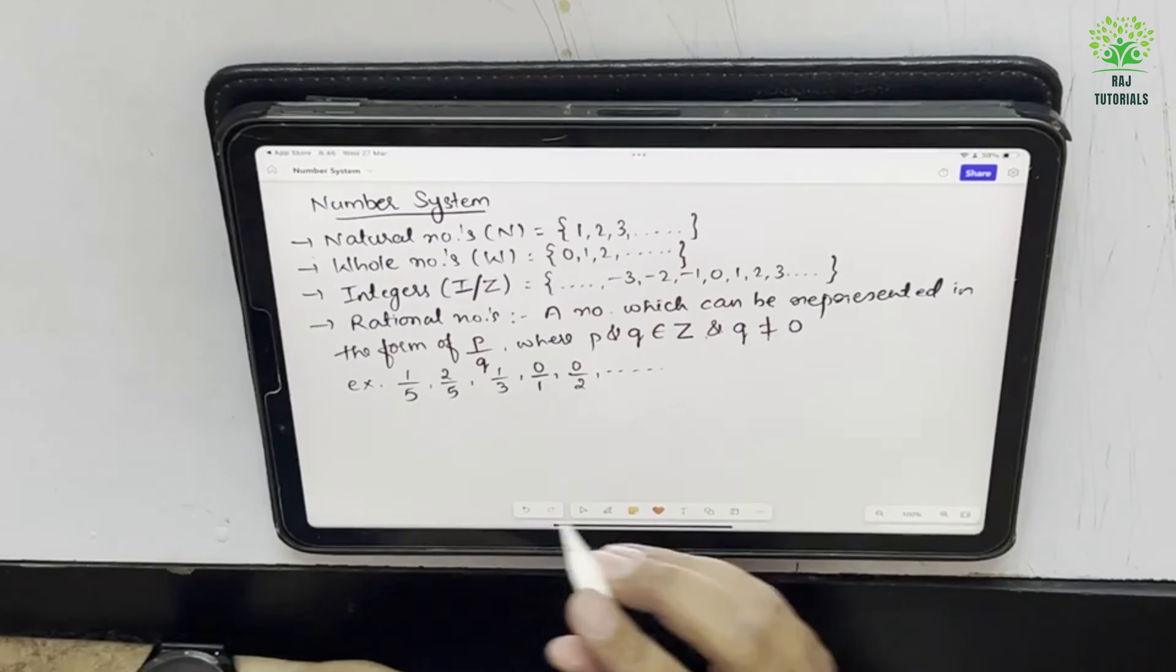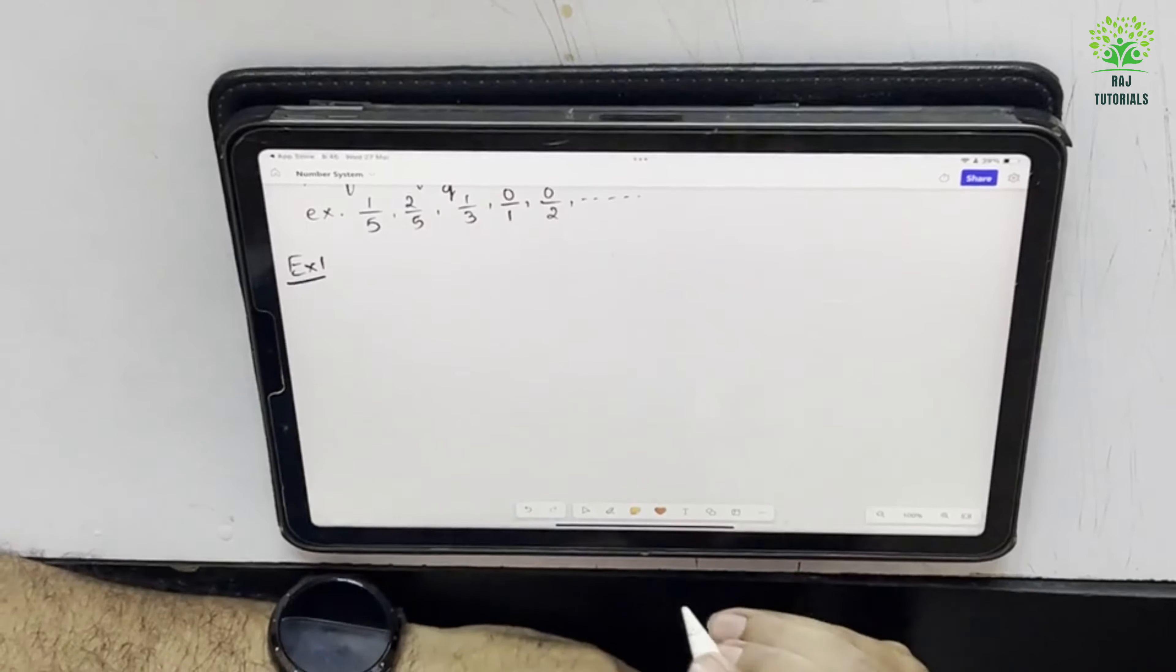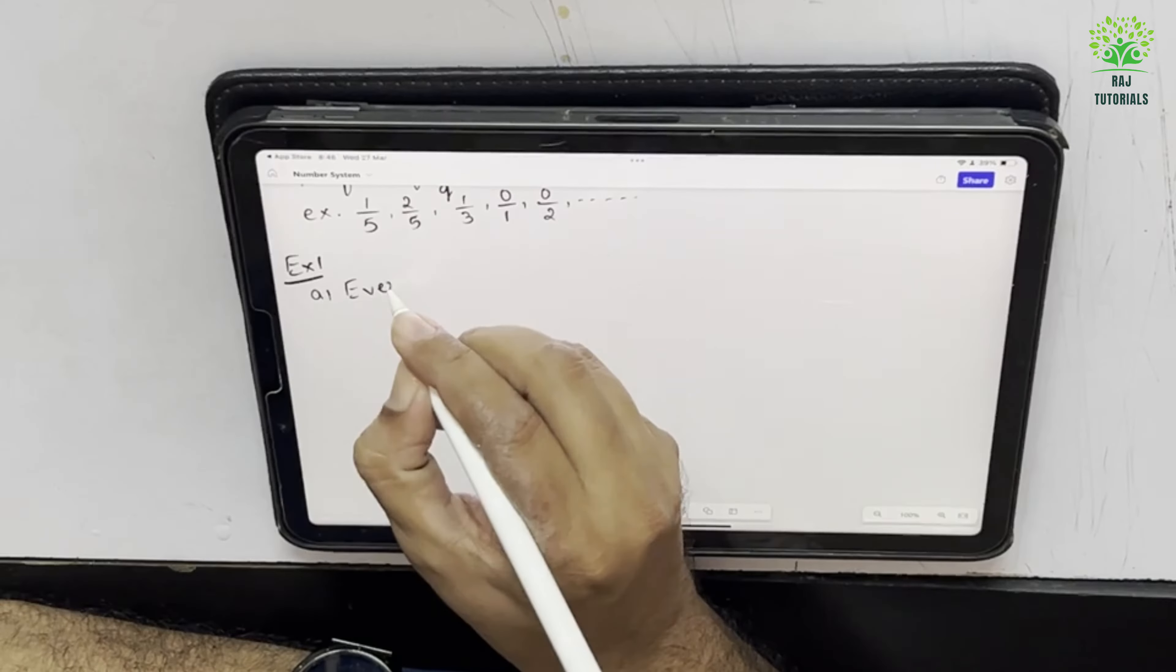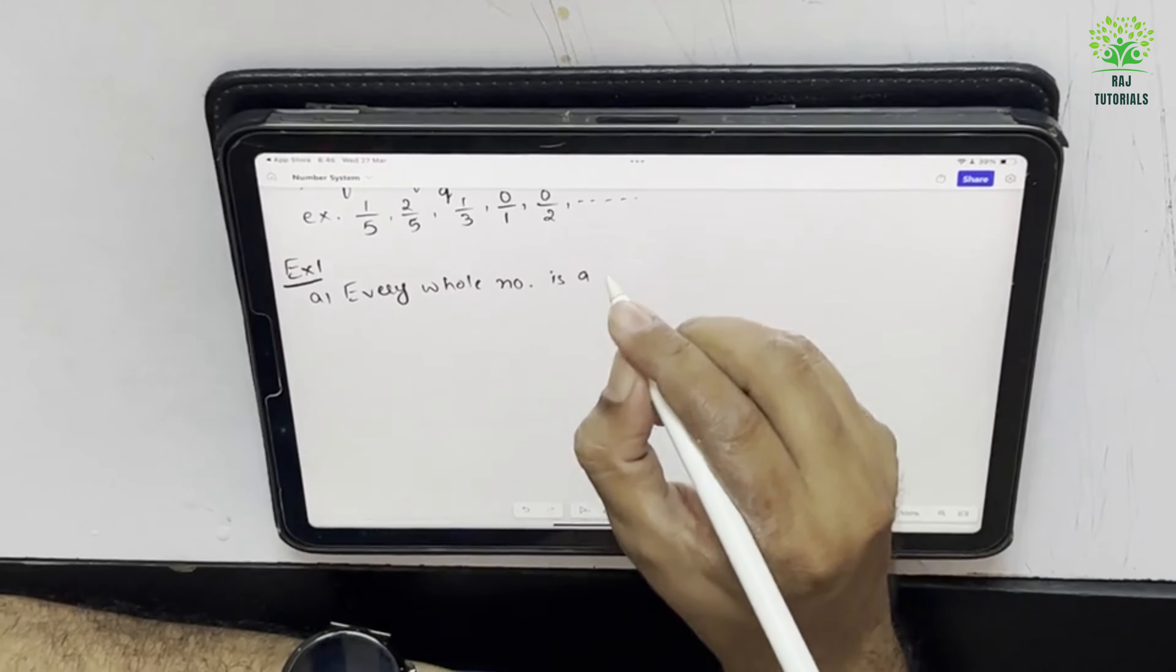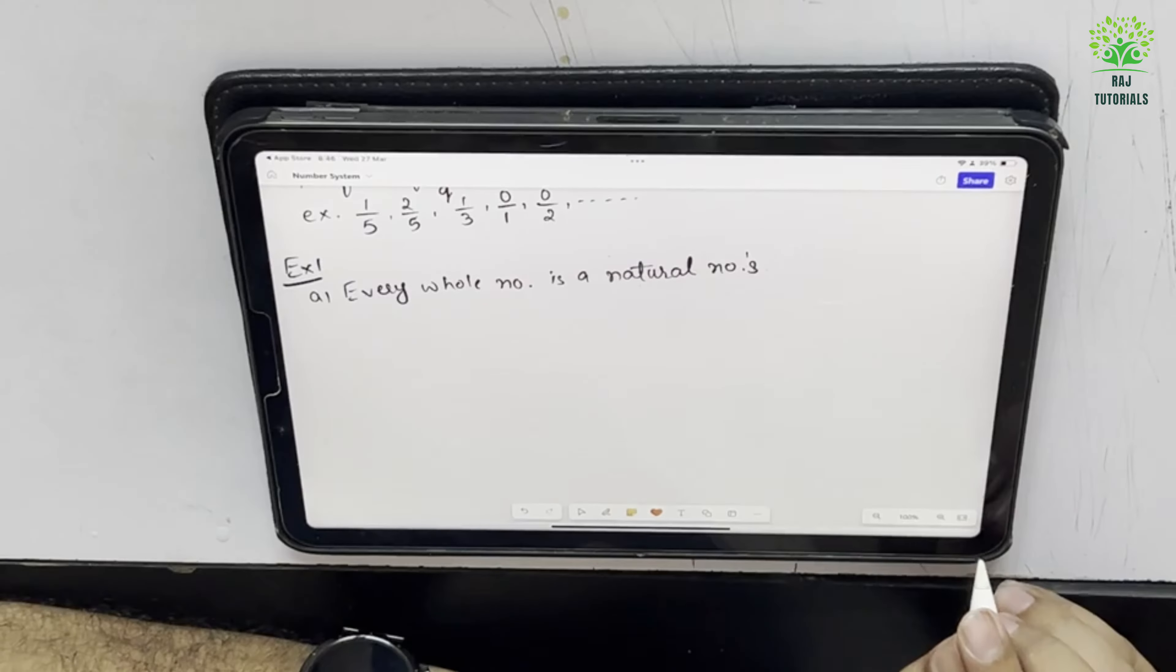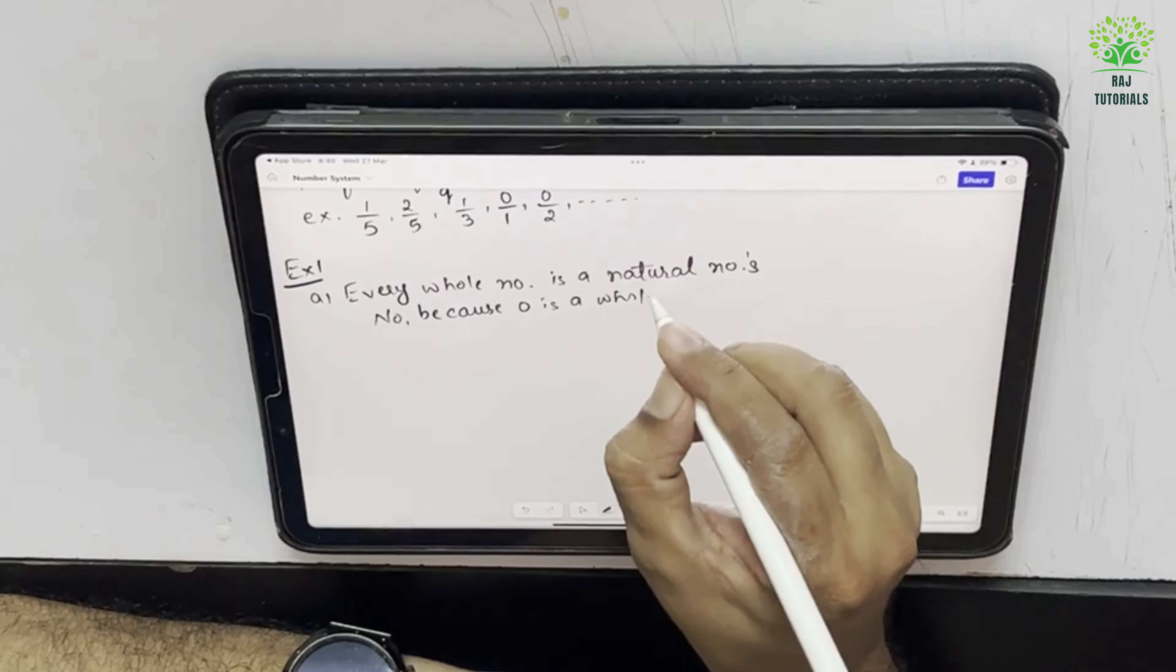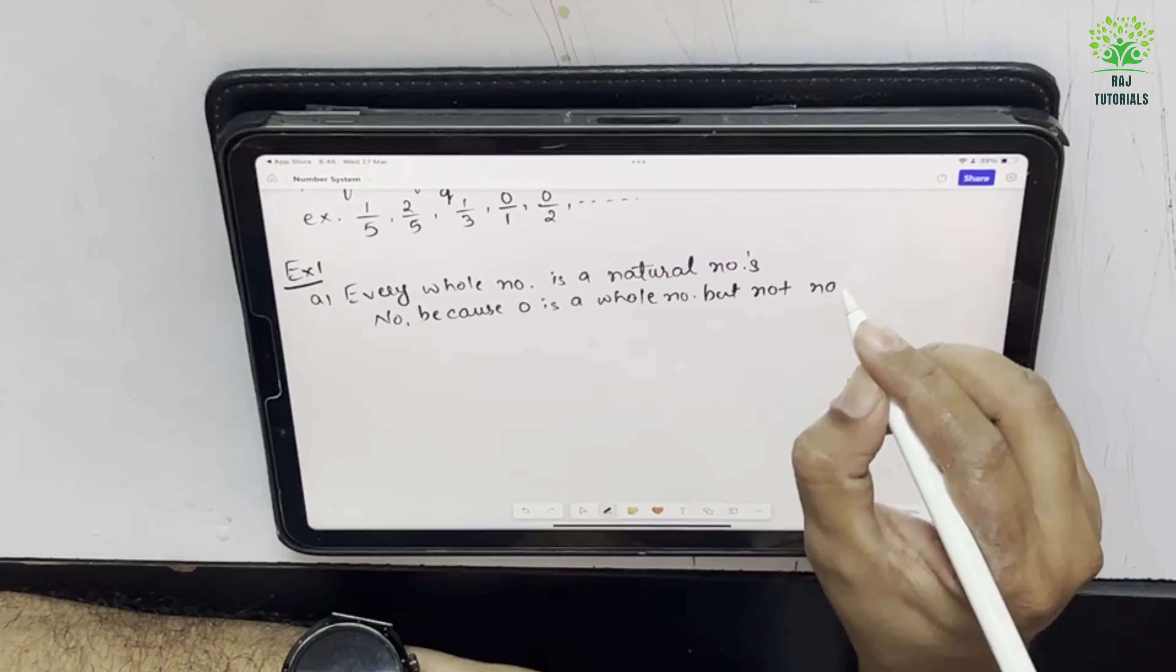Now here he is saying the first example. He is saying are the following statements true or false? Give reason for your answer. First one is every whole number is a natural number. So are all the whole numbers natural number? No, because 0 is a whole number but not natural number.